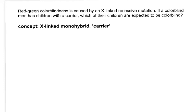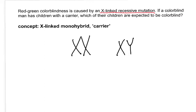Red-green colorblindness is caused by an X-linked recessive mutation. Whenever you see X-linked, you know it's on the X chromosome, so you might as well write down the chromosomes of the people involved. Since we're mammals, we're on an XX/XY system. If a colorblind man — he must have a colorblind allele — marries a carrier, she by definition is a heterozygote. A carrier is a heterozygote for a recessive allele, so she has normal color vision, but he's colorblind because he doesn't have a backup copy.